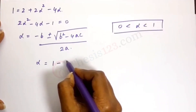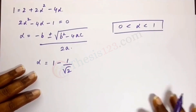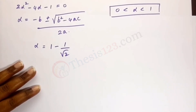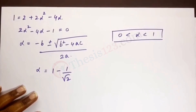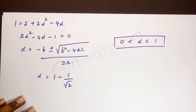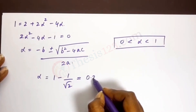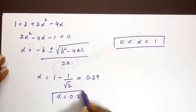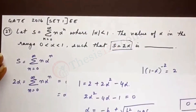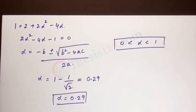We need to choose the value of alpha that lies between 0 and 1, as given in the question. Solving gives alpha equals 1 minus 1 over root 2, which comes to approximately 0.29. So alpha equals 0.29 is the final answer. Since this is not a multiple choice question, we solved it entirely.